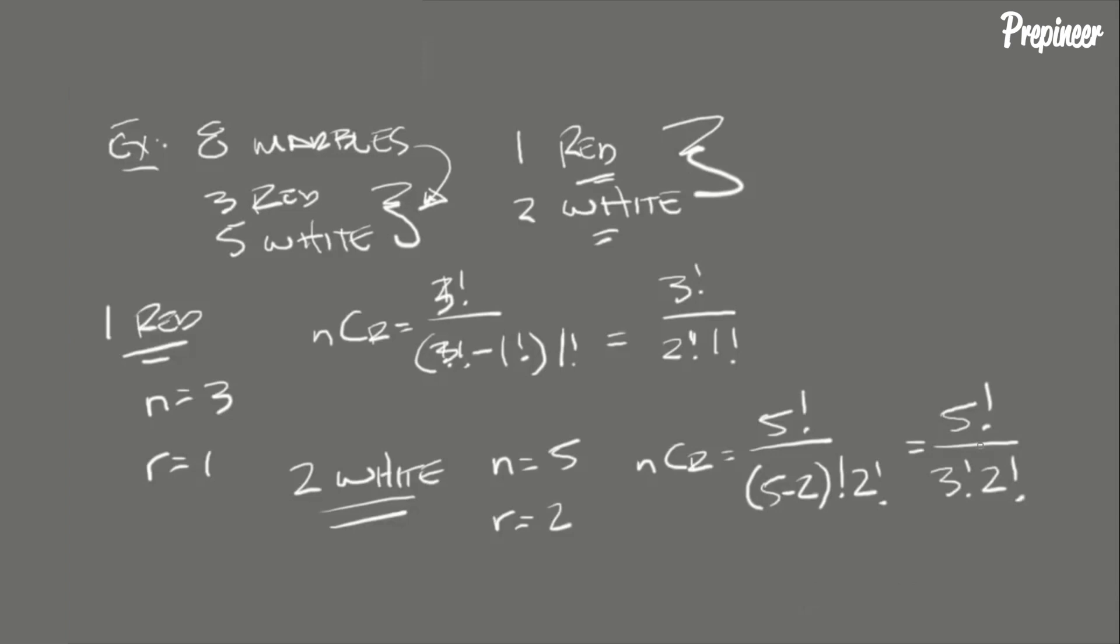...number of possible draws that would contain one red and two white, we use the counting rule and multiply these two possibilities together to get the final value. So that would give us 3 factorial divided by 2 factorial times 1 factorial for our red scenario, multiplied by 5 factorial divided by 3 factorial times 2 factorial...